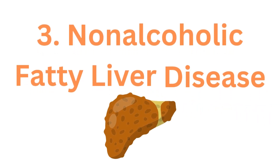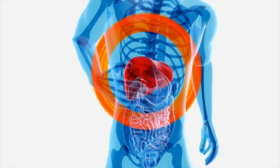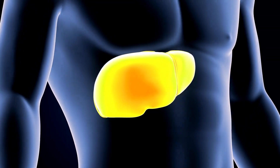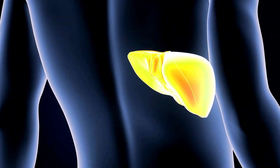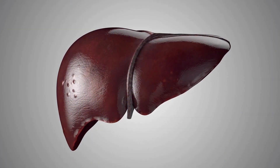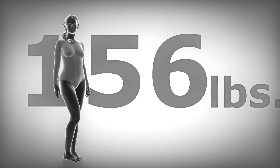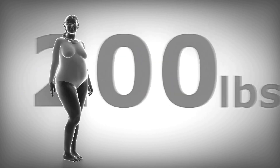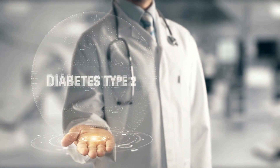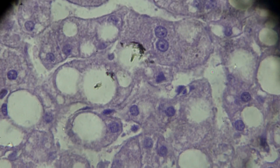Number three: non-alcoholic fatty liver disease. Diabetes makes it more likely that you will develop non-alcoholic fatty liver disease even if you drink very little or no alcohol. Fat accumulates in your liver with this condition. Non-alcoholic fatty liver disease affects at least half of those with type 2 diabetes. It is unknown whether those with type 1 diabetes are at a higher risk. Obesity, which affects both type 1 and type 2 diabetics, also increases the likelihood of developing this disease.